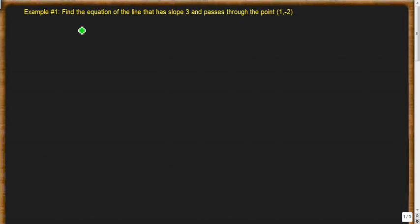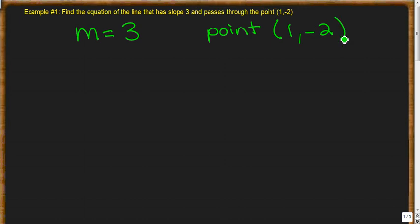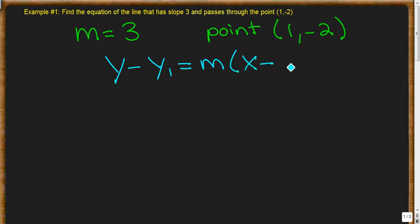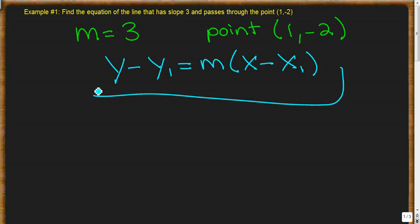We're given our slope, which is 3, and we're given our point, which is (1, -2). We're asked to find the equation of the line. We're going to use our point-slope formula, which is y minus y1 equals m times x minus x1. It's a formula, so we just plug in the information we have.